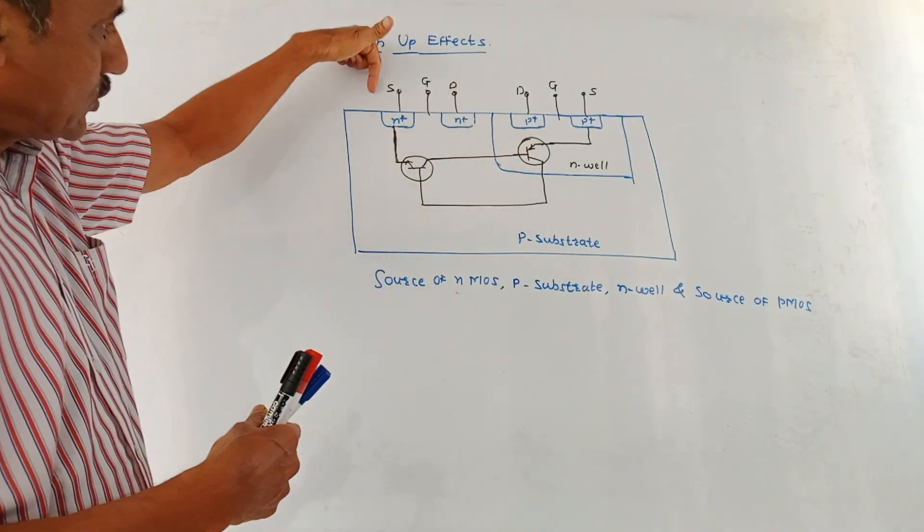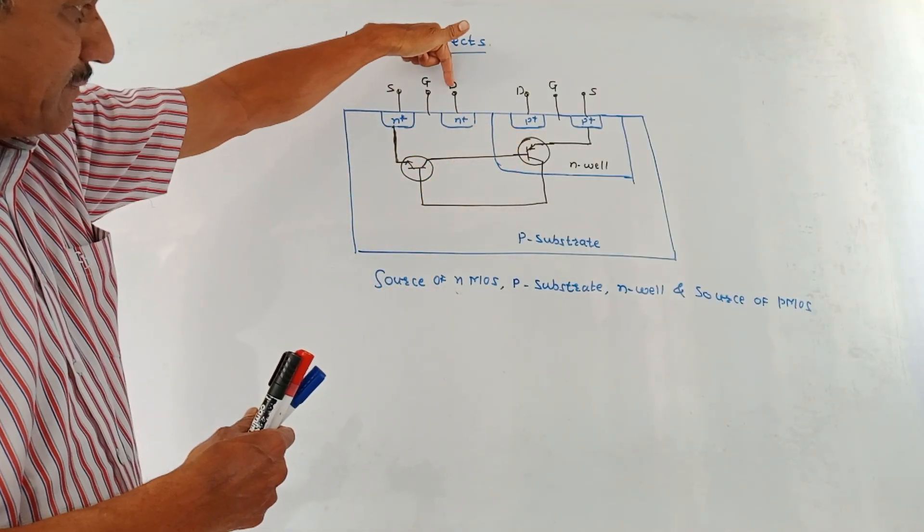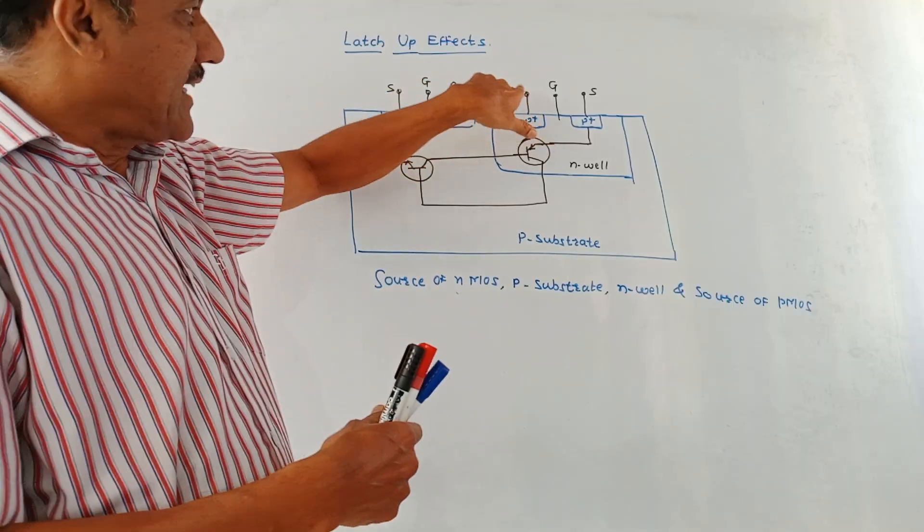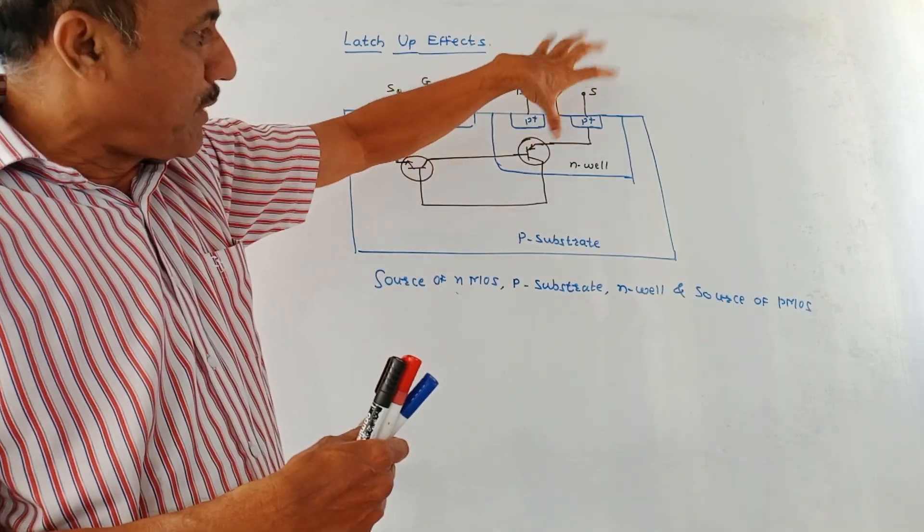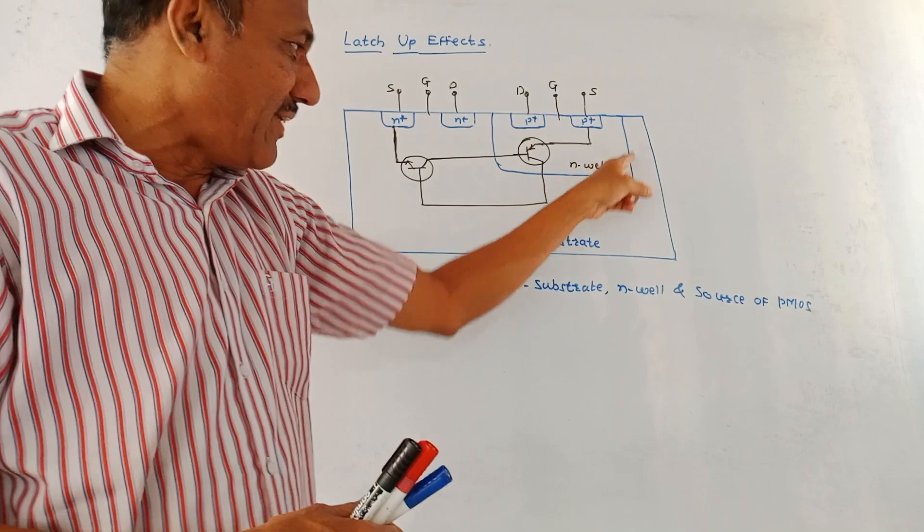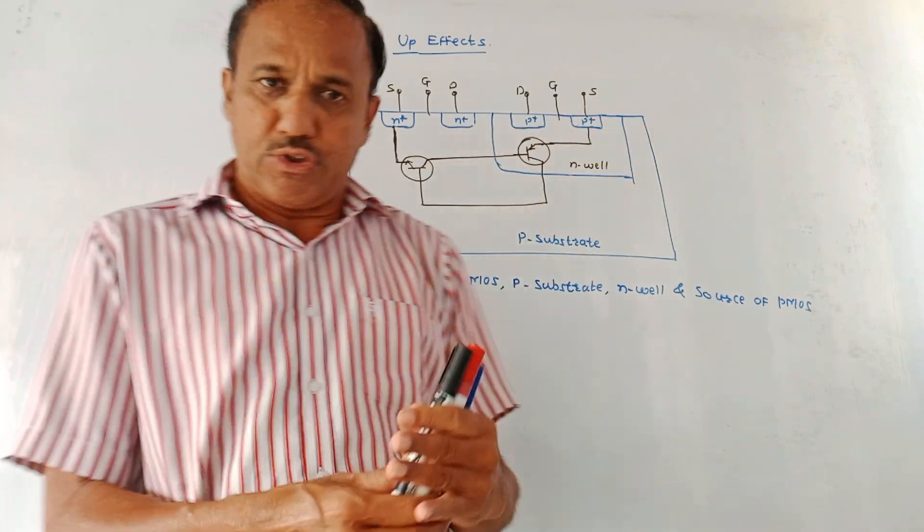Different connections are shown. This is source terminal, gate terminal, drain terminal for the NMOS. This is again drain, gate and source for the PMOS transistor. This is N-well structure and P-type substrate is used.